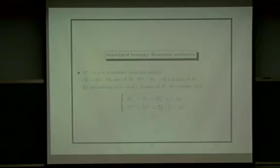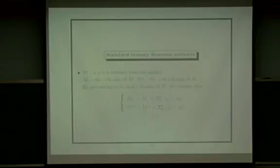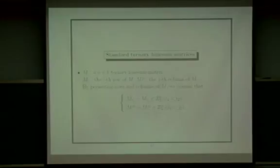Now, similar to the binary case, we can actually permute rows and columns. By the primitive patterns, we can actually find the standard form: if we permute rows and columns properly, we can assume that if i1 is smaller than i2, then the difference of this is composed of non-negative entries. Similarly for the row case. From this, we obtain this kind of standard form.